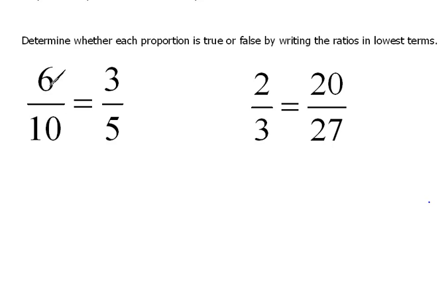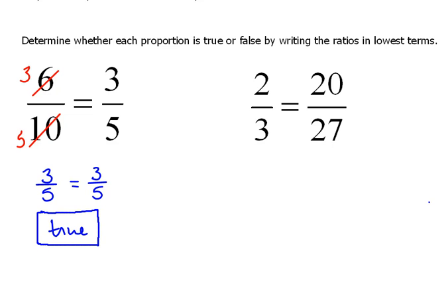Well, if I were to reduce 6 over 10, we could divide top and bottom by a 2. So, 6 divided by 2 is 3, and 10 divided by 2 is 5. So, now what we have is 3 fifths, because that's the reduced version, equals 3 over 5. And that is, in fact, a true statement. So that says that this proportion is true.